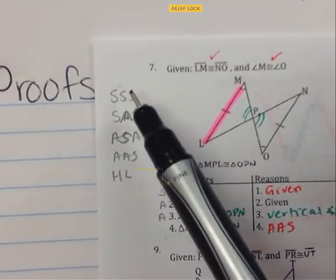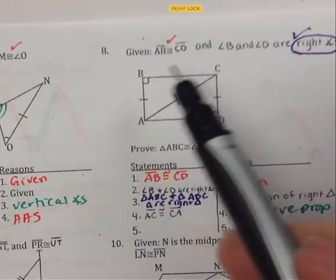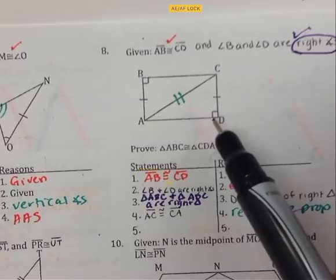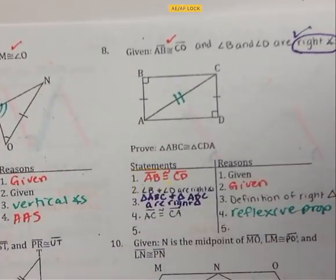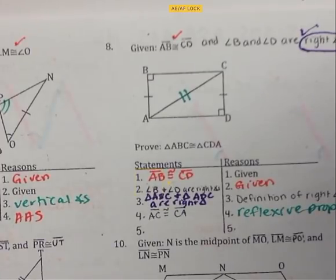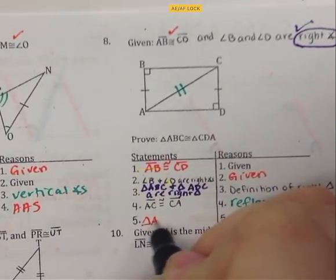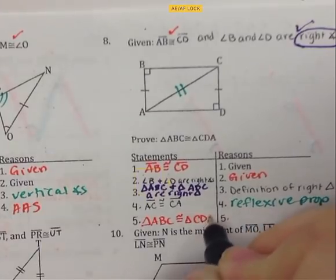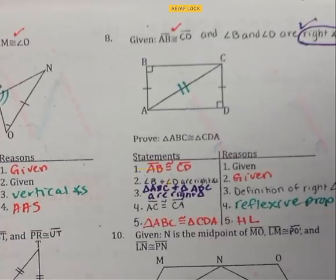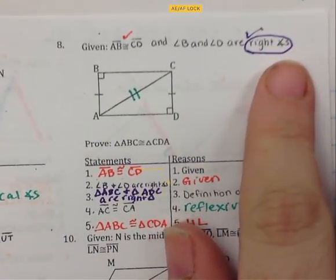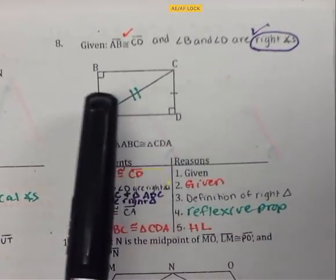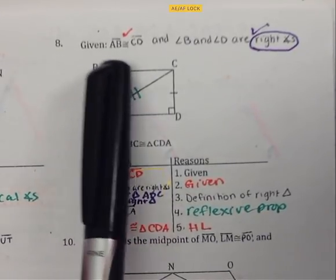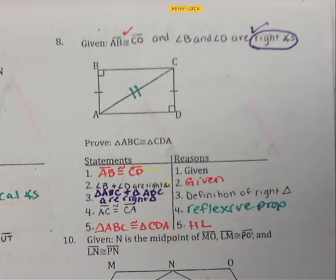HL is used in right triangles. Do we have the hypotenuse marked? Yes. Do we have the same hypotenuse marked in the other triangle? Yes. And we have a leg of each right triangle marked congruent. So these are congruent because of HL. We can write that triangle ABC is congruent to triangle CDA because of HL. If you see right angles, you can prove the angles are congruent or prove the triangles are right triangles — you don't have to do both. Side-side-angle with a right angle is automatically HL.